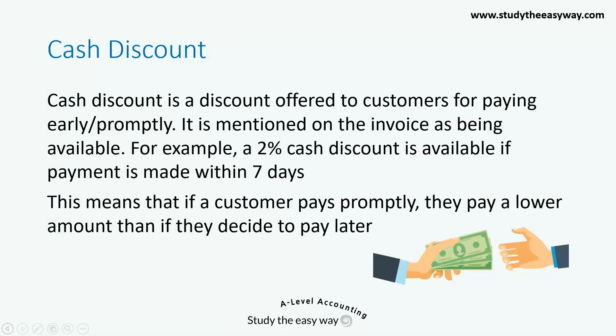Cash discount is a discount offered to customers for paying early or promptly. It's mentioned on the invoice as being available. For example, an invoice might say that a 2% cash discount is available if payment is made within 7 days of the date of the invoice.